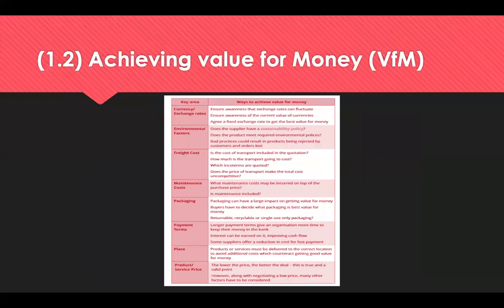Achieving value for money can be described as using public resources in a way that creates and maximises public value. The use of public resources is defined as public sector capital and resource expenditure, the stewardship of assets and raising revenue. This means value for money is considered at a national level. This ensures the assessment focuses on the impacts of a proposal that are additional to the overall public value — so we don't just look at cost; we also look at exchange rates, environmental factors, freight and maintenance, much like the total cost of ownership.